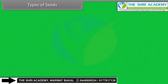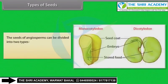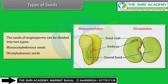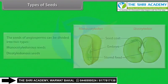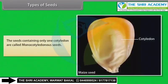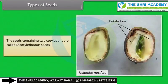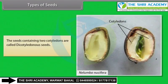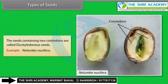Types of Seeds: The seeds of angiosperms can be divided into two types — monocotyledonous seeds and dicotyledonous seeds. Seeds containing only one cotyledon are called monocotyledonous seeds, example: maize. Seeds containing two cotyledons are called dicotyledonous seeds, example: Nelumbo nucifera.